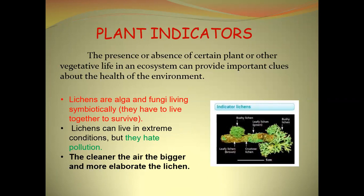Plant indicators: the presence or absence of certain plants or other vegetative life in an ecosystem can provide important clues about the health of the environment. The example is lichens — algae and fungi living symbiotically. They must live together to survive. Lichens can live in extreme conditions but they are sensitive to pollution. The cleaner the air, the bigger and more elaborate the lichens will be. If water quality is good, their growth will be high; if water pollution is present, the quantity of lichens will decrease.